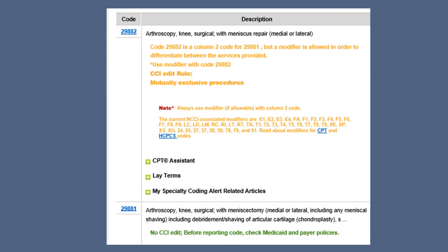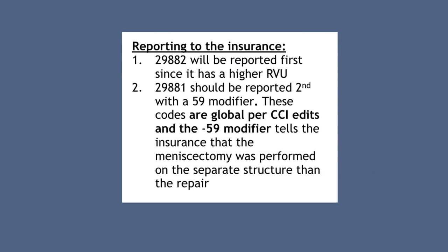When checking these two codes in NCCI edits — which can be checked in Encoder Pro or Supercoder — you will see that 29882 for the meniscal repair and 29881 are global. 29881 is global to the meniscal repair. Since they were done in separate compartments, they will both be reported and unbundled. Report 29882 for the meniscal repair first since it has the higher RVU. 29881 for the meniscectomy should be reported second with a 59 modifier. These codes are global per CCI edits, and the 59 modifier tells the insurance that the meniscectomy was performed on a separate structure than the repair.